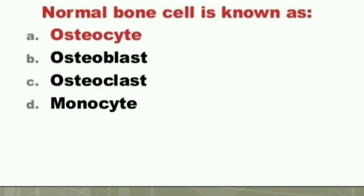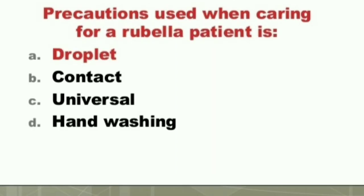Next question: A normal bone cell is known as: A) Osteocyte, B) Osteoblast, C) Osteoclast, D) Monocyte. The answer is A) Osteocyte. A normal bone cell is known as an osteocyte.